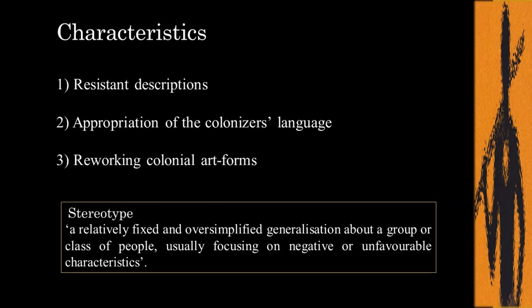There are some important characteristics to note. First, postcolonial literature includes what we term as 'resistant descriptions' — detailed descriptions of indigenous people, places, and their practices which counteract, resist, or oppose the racial stereotypes and generalizations that colonizers promoted, like what we have seen in Mr. Johnson or Heart of Darkness. Secondly, although these writers want to preserve their native identity, they choose to write in the colonizer's language — in this case, English — but they play with the language, remolding it to reflect the rhythms and syntax of their indigenous languages, sometimes even inventing new words.